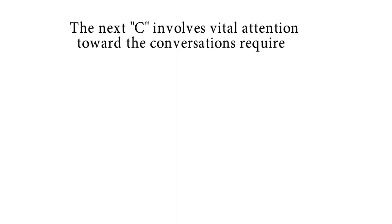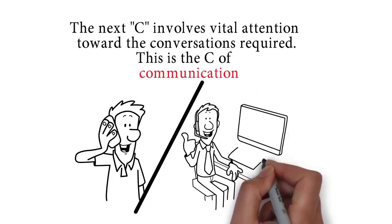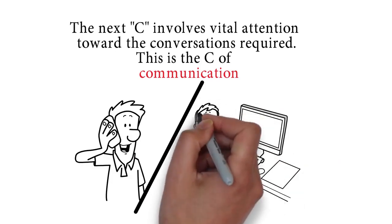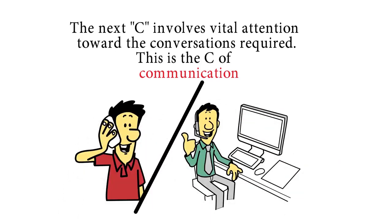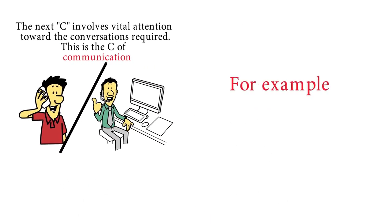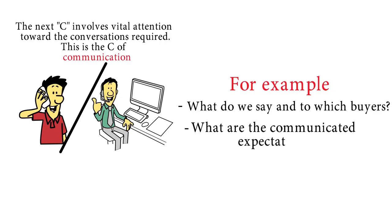The next C involves vital attention towards the conversations required. This is the C of communication. Communication requires precision to avoid confusion when relaying messages that matter most to customers. For example, what do we say and to which buyers? What are the communicated expectations of this upcoming initiative?